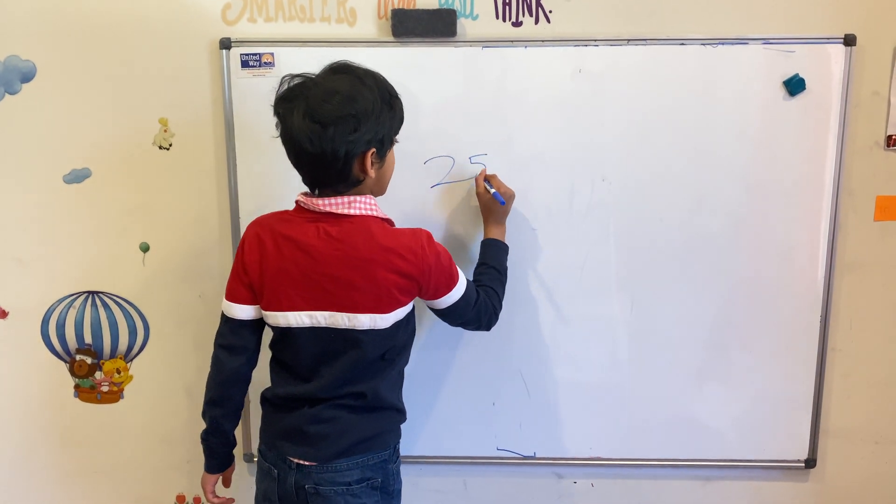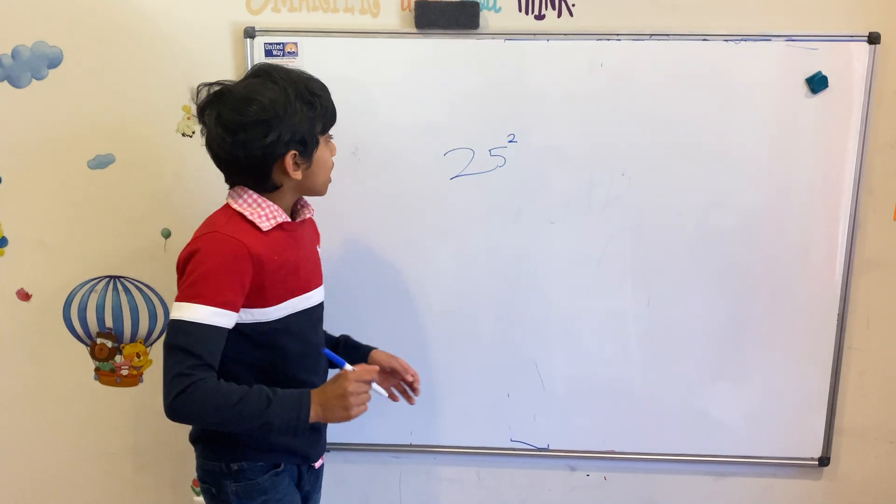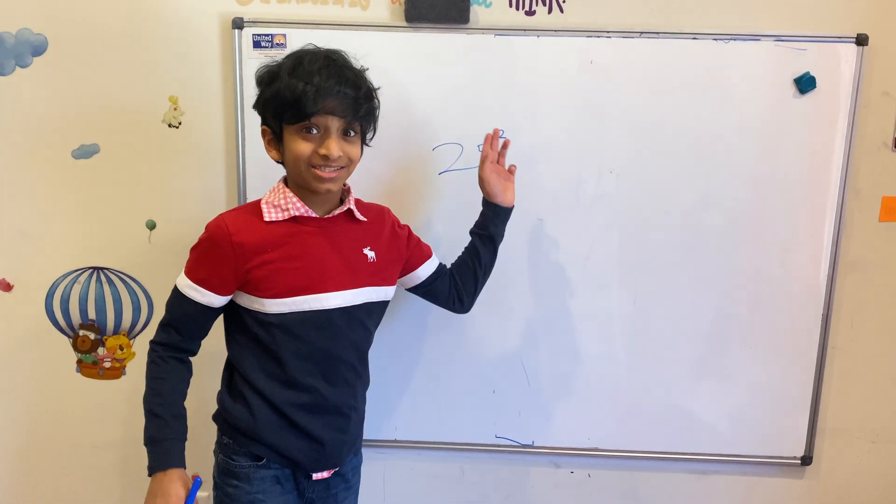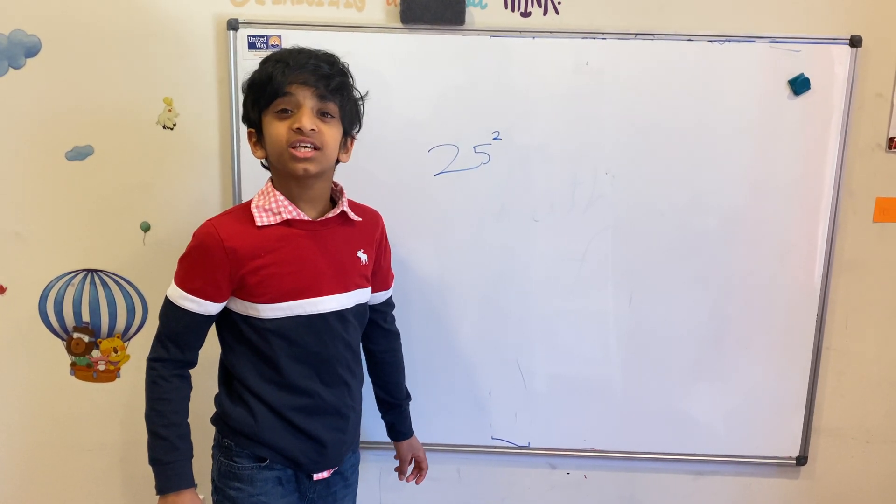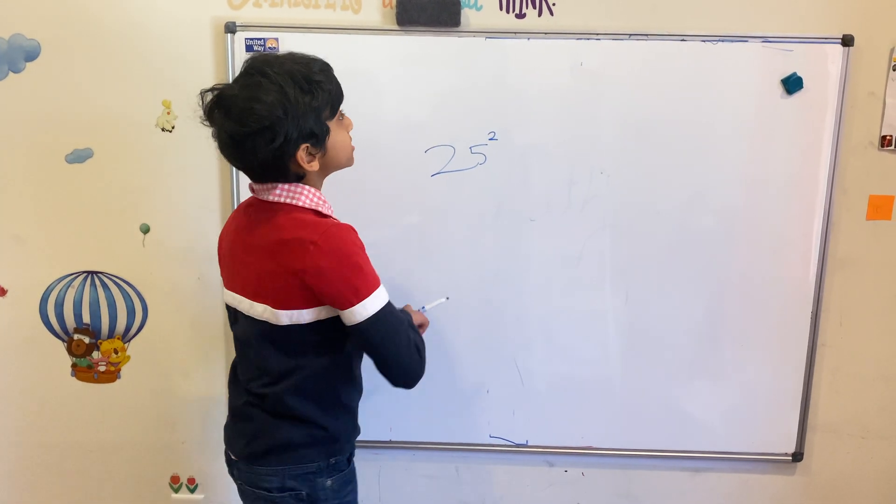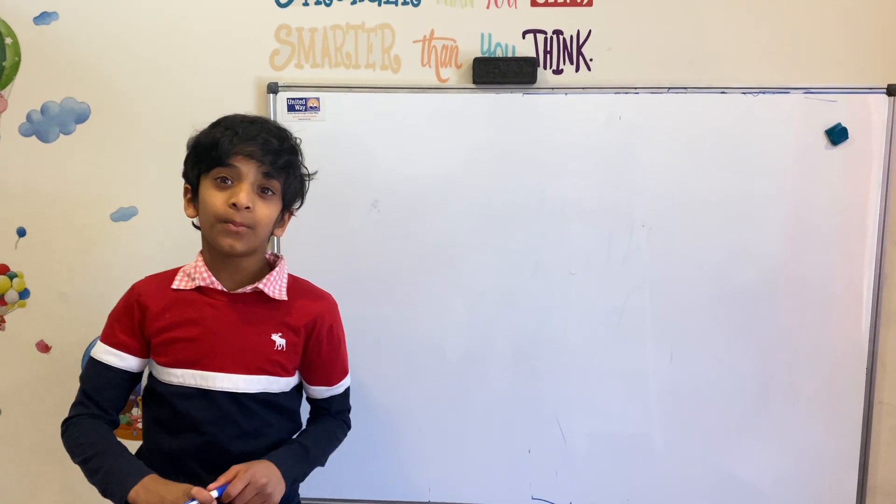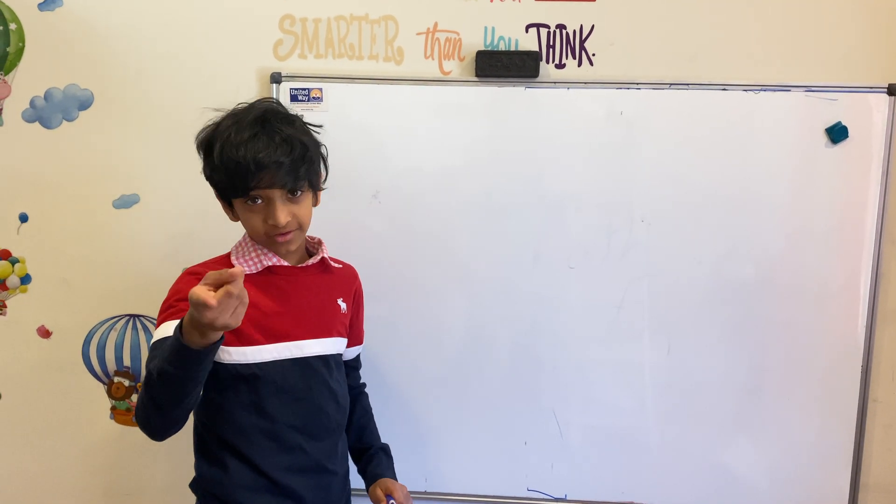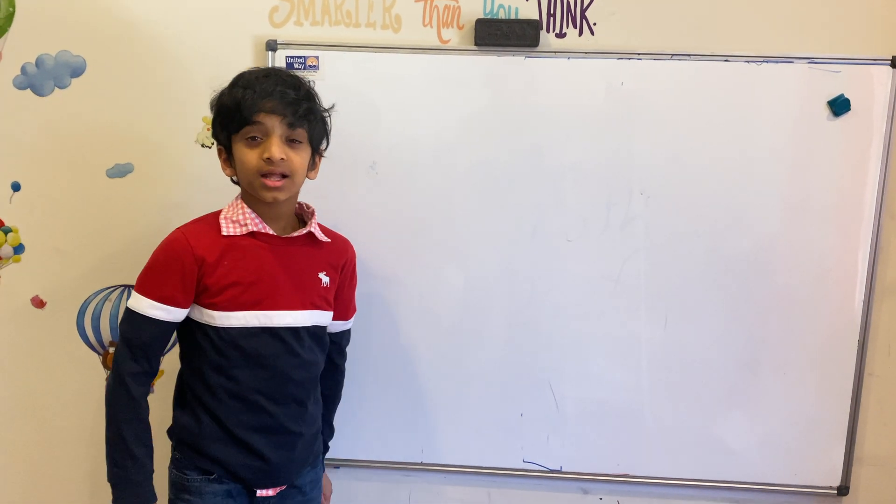25 squared. Let me solve it real quick and you guys are going to be shocked how fast this trick works. 625. I think that's correct. You see it's pretty easy. I do not do a whole multiplication. You'll see the trick - it's very simple.